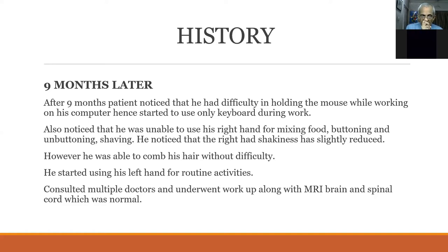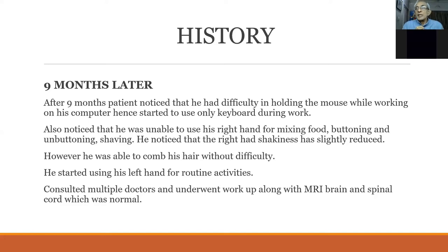If you ask him specifically about the difficulty, he may say he is slow in doing activities. For example, shaving — normally done quickly, but now he has to slowly shave. It takes a lot more time to button or unbutton. All his activities are being affected because the disease is advancing with more and more rigidity — this is bradykinesia, a slowing of all movements.